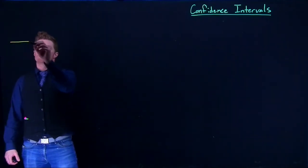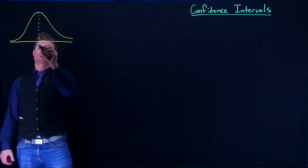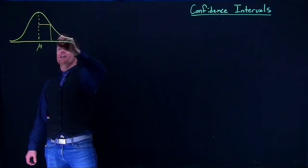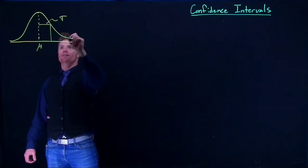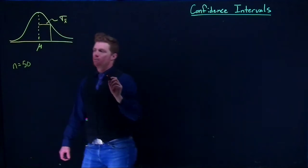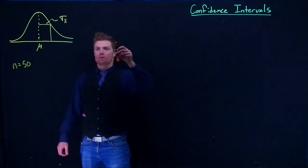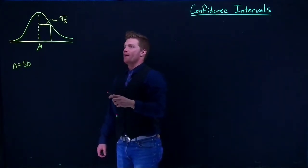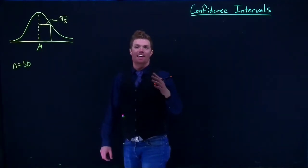Previously, we've known that we have some distribution where our normal distribution is centered at our mean, we have a standard deviation, and if we were using the central limit theorem we might also have n equals like 50, and then we'd do sigma x-bar. We could ask questions like what's the probability of being in the 99th percentile, or how big would our mean have to be if we were in the 99th percentile, or we have a measurement that is so many standard deviations below the mean — what's the probability that we get that or less?